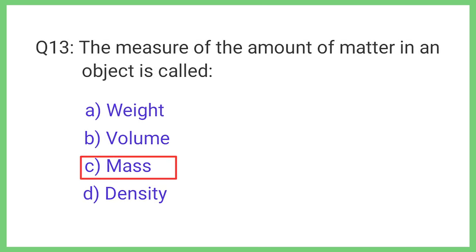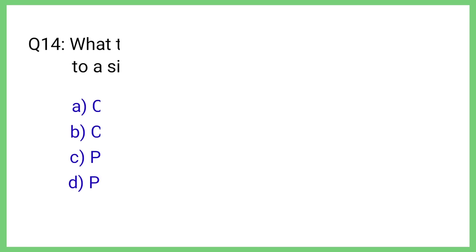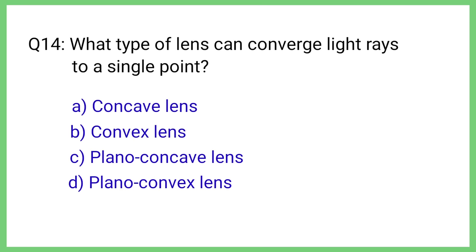Question No. 14. What type of lens can converge light rays to a single point? The correct answer is Option B. Convex lens.